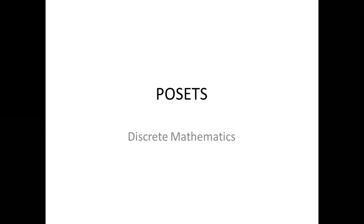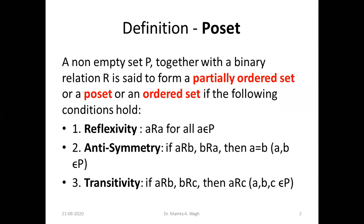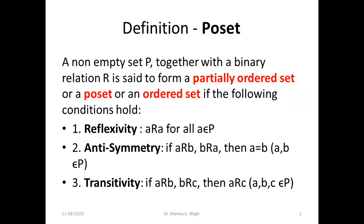So in short we call them posets. Let us first take the definition of a poset. A poset is a non-empty set P together with a binary relation R, and it satisfies certain conditions. We have three conditions: reflexivity, anti-symmetry, and transitivity. We have already seen these three relations in the previous lecture. We have a non-empty set P and a binary relation denoted by R on that set.